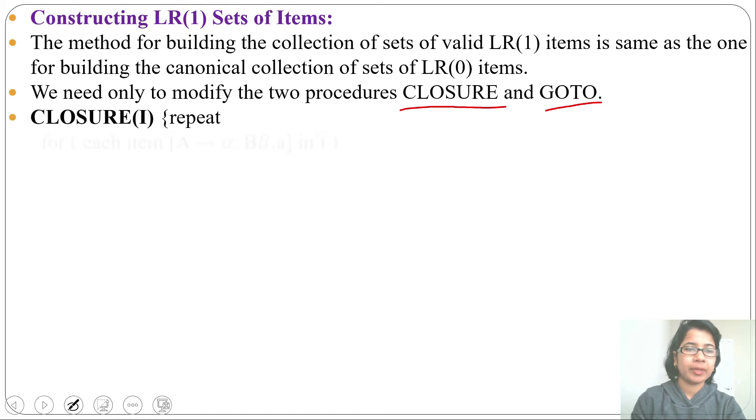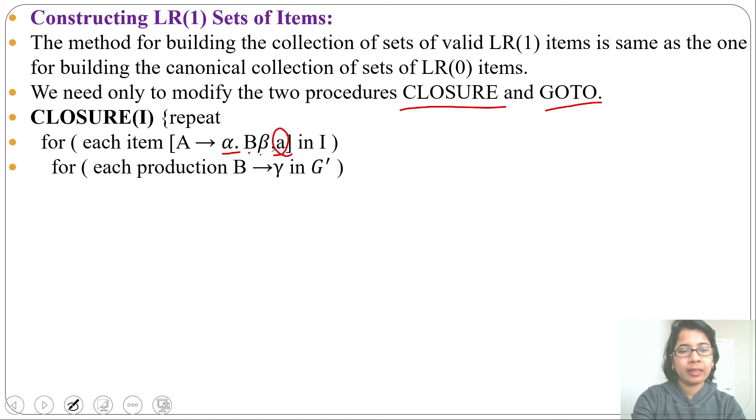In CLOSURE we will repeat the process. For each item [A → α·Bβ, a], where a is the lookahead symbol, for each item I in I—I is one state—then for each production B → γ in G', G' is the augmented grammar, and for each terminal b in FIRST(βa)...